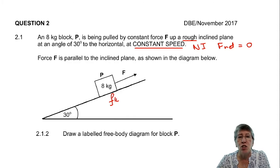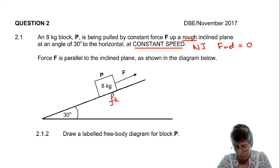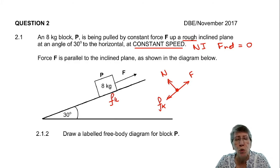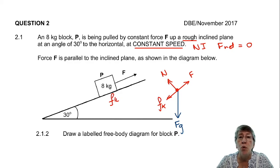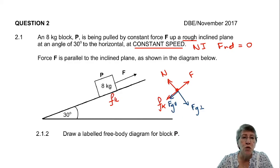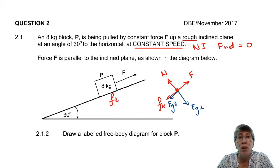The first question here is just to draw a labelled free body diagram for block P. You've got the normal force, the frictional force, the applied force, and now we need gravity. For gravity, you can draw either the whole gravity, or you can substitute that for the two components. Just remember that you are never supposed to have the gravitational force and the components on one drawing — if you have both, you're drawing that force twice and you will lose that mark.